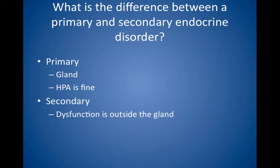In secondary disorders, the true dysfunction is outside the gland itself. For example, in secondary hypothyroidism, thyroid hormone is low, but TSH and/or thyroid releasing hormone is also low, which is inappropriate in the setting of low thyroid hormone. If the pituitary is destroyed or surgically removed, secondary hypothyroidism results from low TSH. The thyroid gland functions well, but no TSH is available to stimulate it.